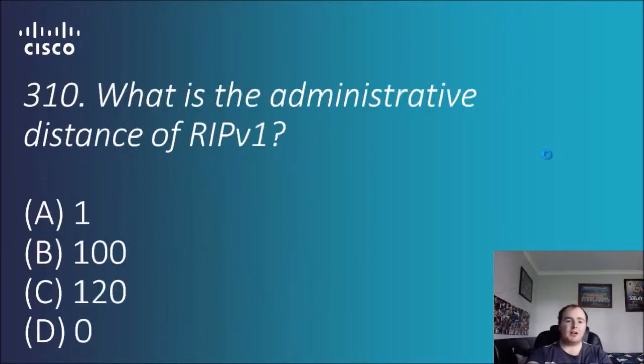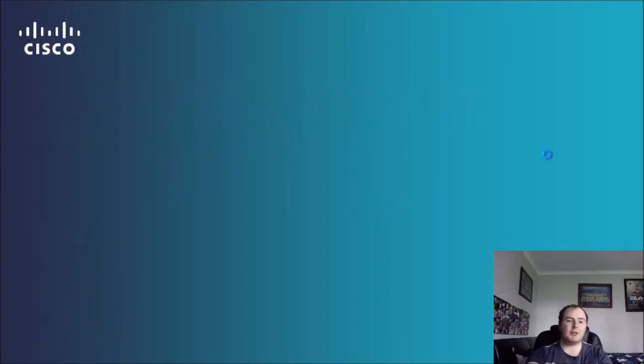Question 310: what is the administrative distance of RIP version 1? It is 120. If you look at the table shown earlier, RIP v1 is 120.